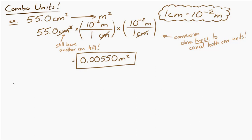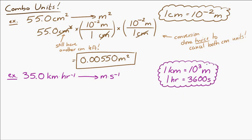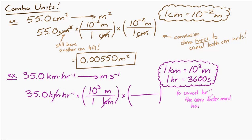Now let's look at 35.0 kilometers per hour and convert it to meters per second. One kilometer is 10³ meters, and one hour is 3,600 seconds. Starting with 35.0 km/h, I first get rid of kilometers: 10³ meters over 1 kilometer, so kilometers cancel and I'm left with meters. Then I deal with the hours in the denominator — to cancel them, hours must go in the numerator of my conversion factor: 1 hour over 3,600 seconds. Kilometers cancel, hours cancel, and I'm left with meters per second: 9.72 meters per second.